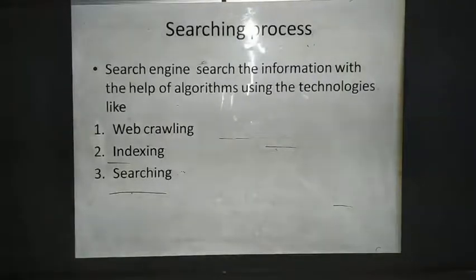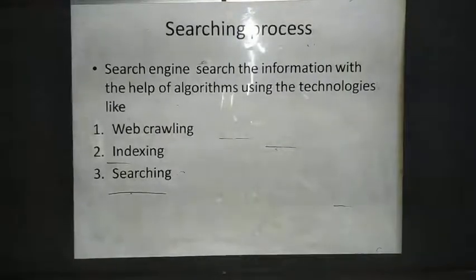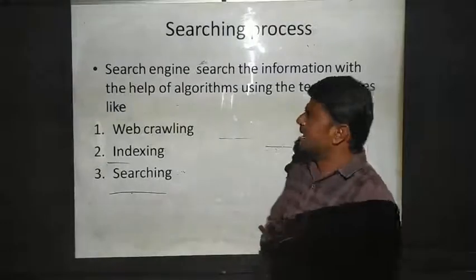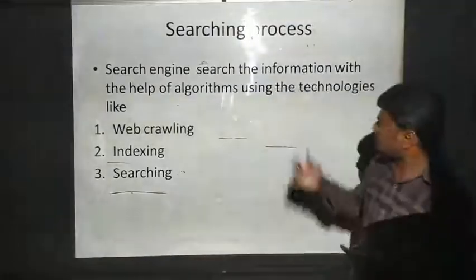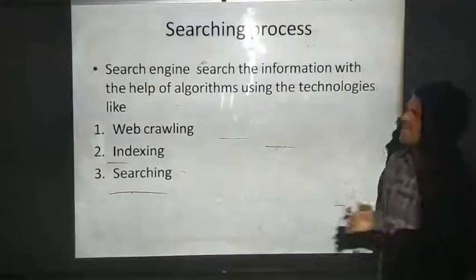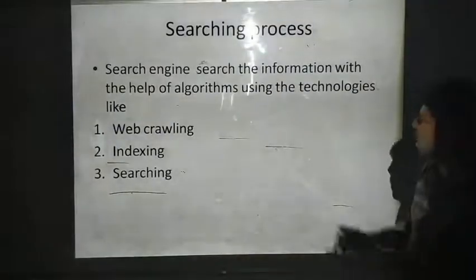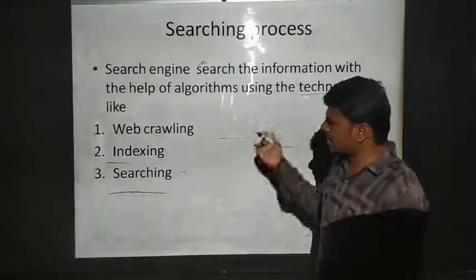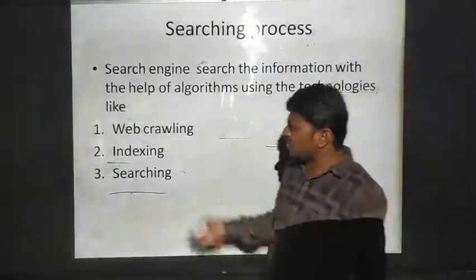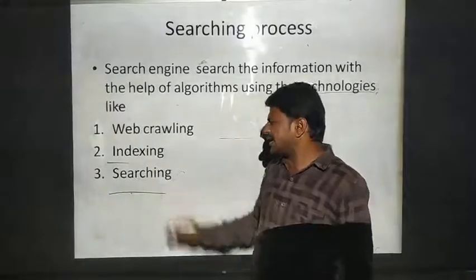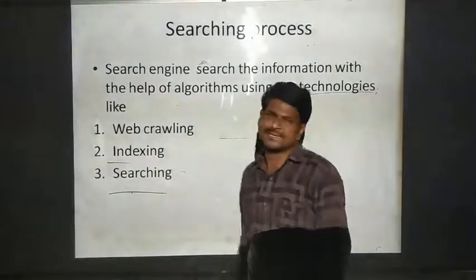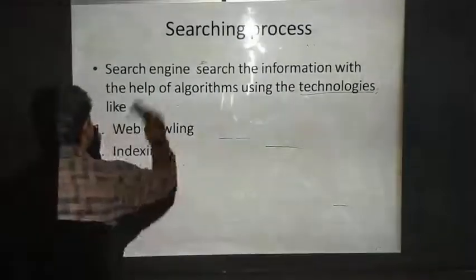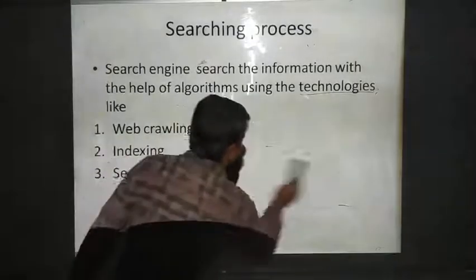Now, the searching process — how does it take place? Search engines search for information with the help of algorithms using technologies such as web crawling, indexing, and searching. These are the web technologies used for searching.